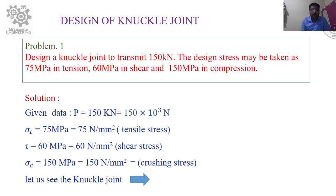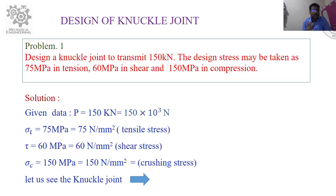Problem number one: Design a knuckle joint to transmit 150 kilonewtons. The design stress may be taken as 75 megapascal in tension, 60 megapascal in shear, and 150 megapascal in compression. Write down the given data and observe carefully.